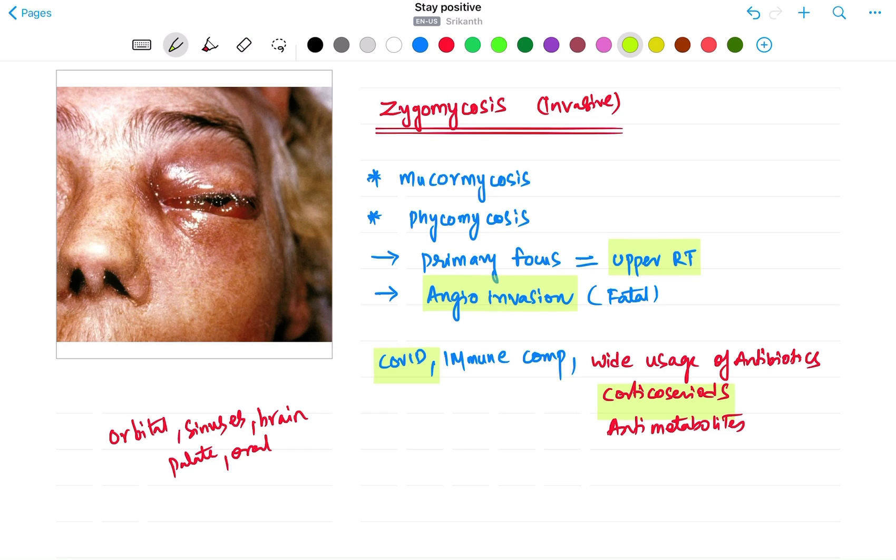And coming to pathophysiology of this infection, this infection primarily starts from the primary focus, that is nothing but called as your respiratory tract. So basically it originates from the respiratory tract or the nasal cavity which is the primary focus, and followed by through the blood.